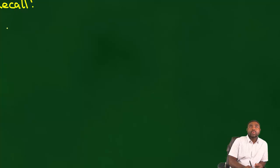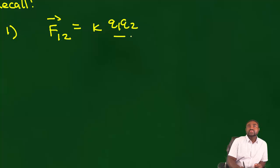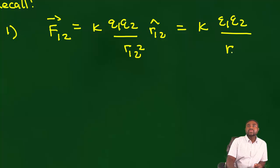So recall: F12 is equal to K Q1 Q2 divided by R12 squared R12 hat, which is the same as K Q1 Q2 divided by R12 cubed R12 bar.